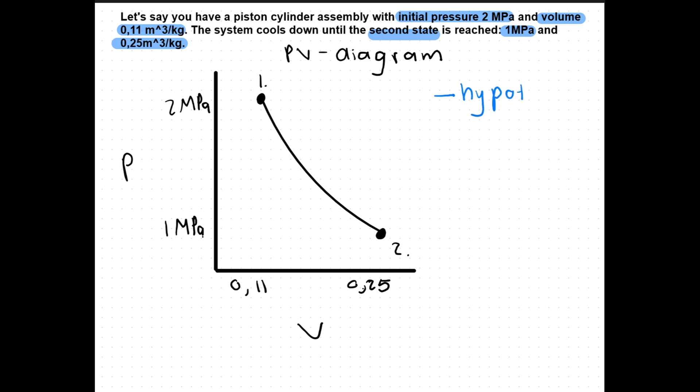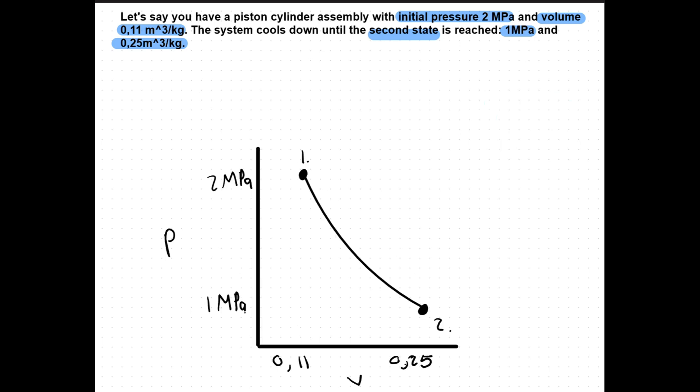Since pressure and volume are state functions the path does not matter and we can use a simpler path to do calculations. Like the following: this process consists out of two steps. First an isochoric cooling, then the second step an isobaric heating. When you do calculations with these hypothetical paths you will get the same answer as the initial path but it will be far less complicated to do the calculations.